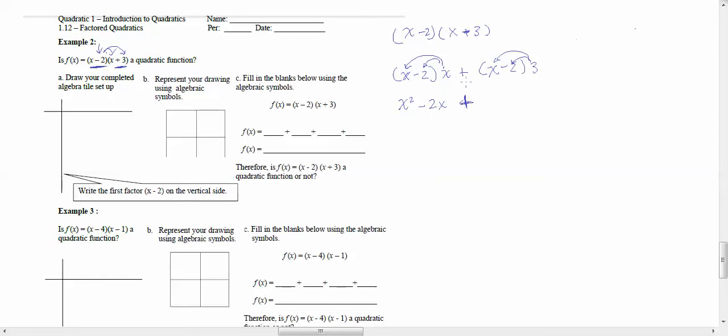The negative 2 times x, that would be negative 2x. I put a big fat plus sign in between there. Now I'm going to introduce the 3. This is 3x, and the negative 2 times 3, that's negative 6. So I made sure that this thing right here was introduced to everybody in here.